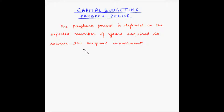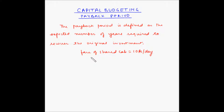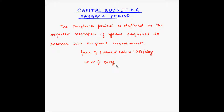Let us understand this using a simple example. Suppose you are going to college every day, that is seven days a week. You do not have a mode of transport that you own, and hence you take a ride on a shared cab every day and spend 10 rupees on it daily. Now let us say you decide to buy a cycle of your own which costs 1000 rupees.